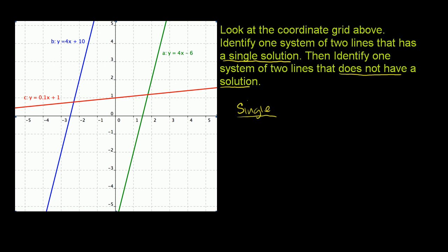So if we look right here at the points of intersection, this point right there satisfies this equation y is equal to 0.1x plus 1. And it also satisfies this blue line — the graph that that line represents — y is equal to 4x plus 10. So this dot right here, that point represents an x and y value that satisfies both of these constraints.